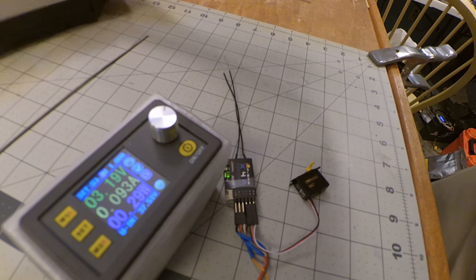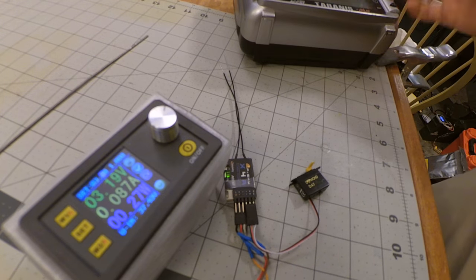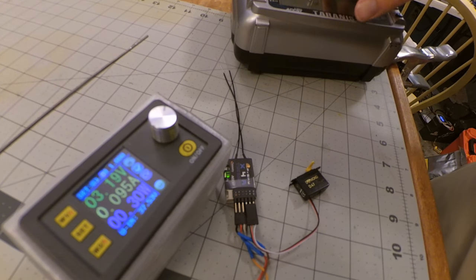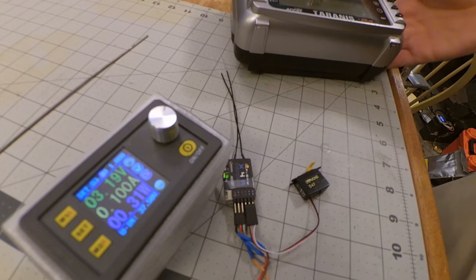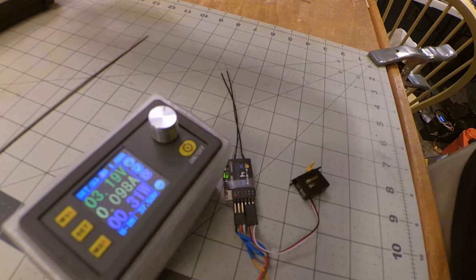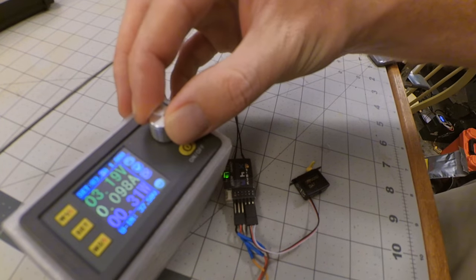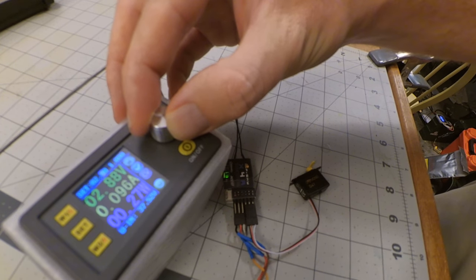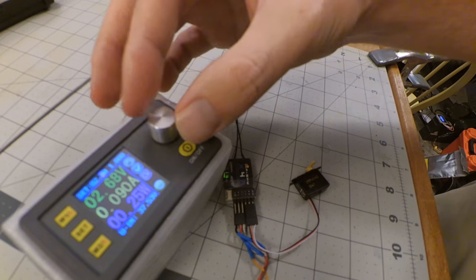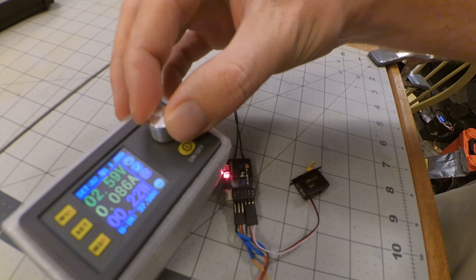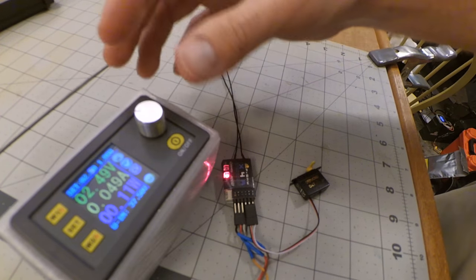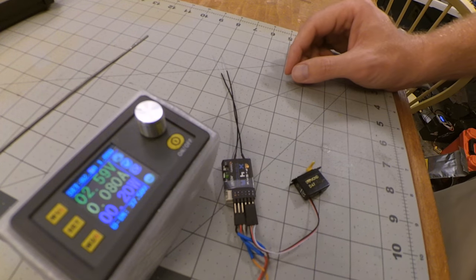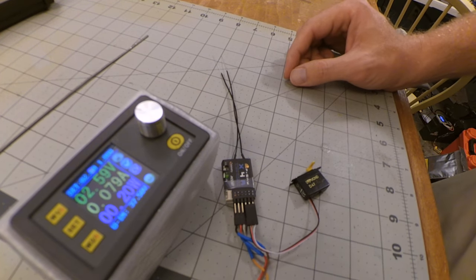So again, it seems like the voltage cutoff on the radio is about 3.3, 3.4 volts, but the connection still stays solid. Keep going. Telemetry lost. There it is, telemetry recovered. So it'll go down to 2.6 volts before it cuts.